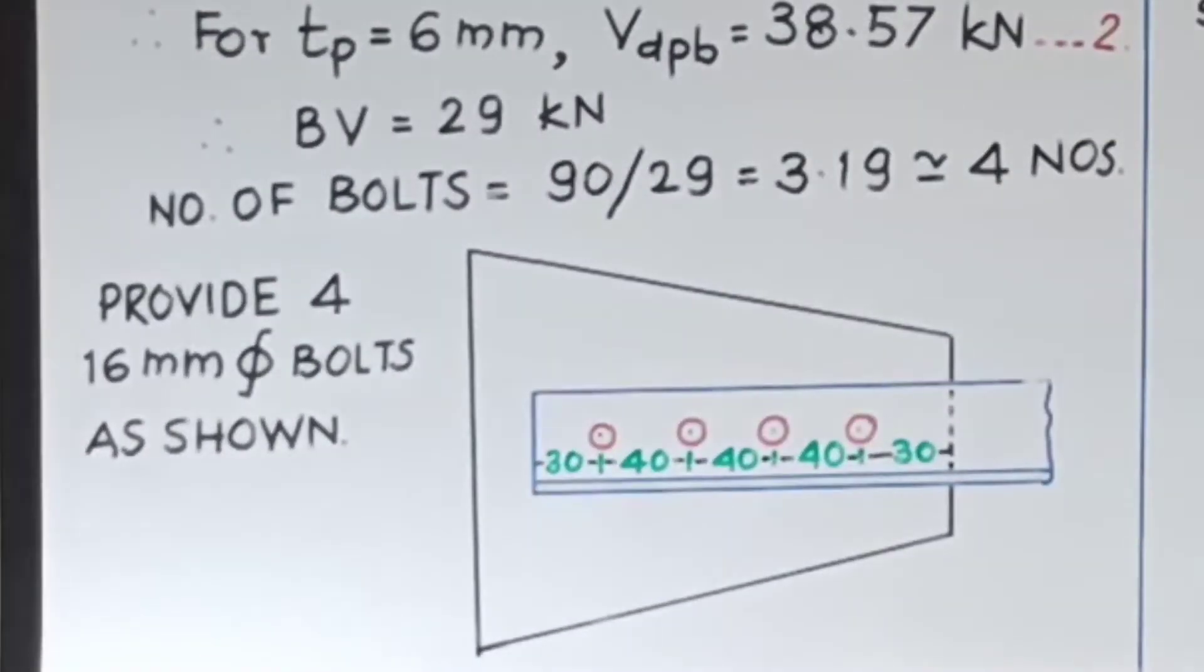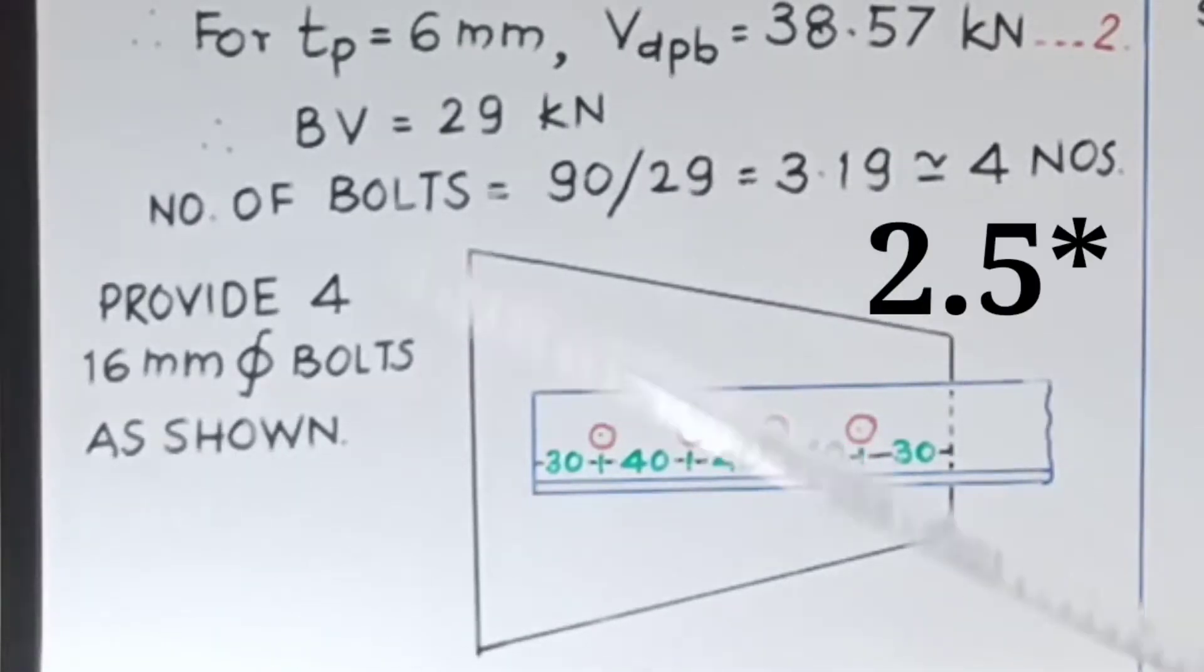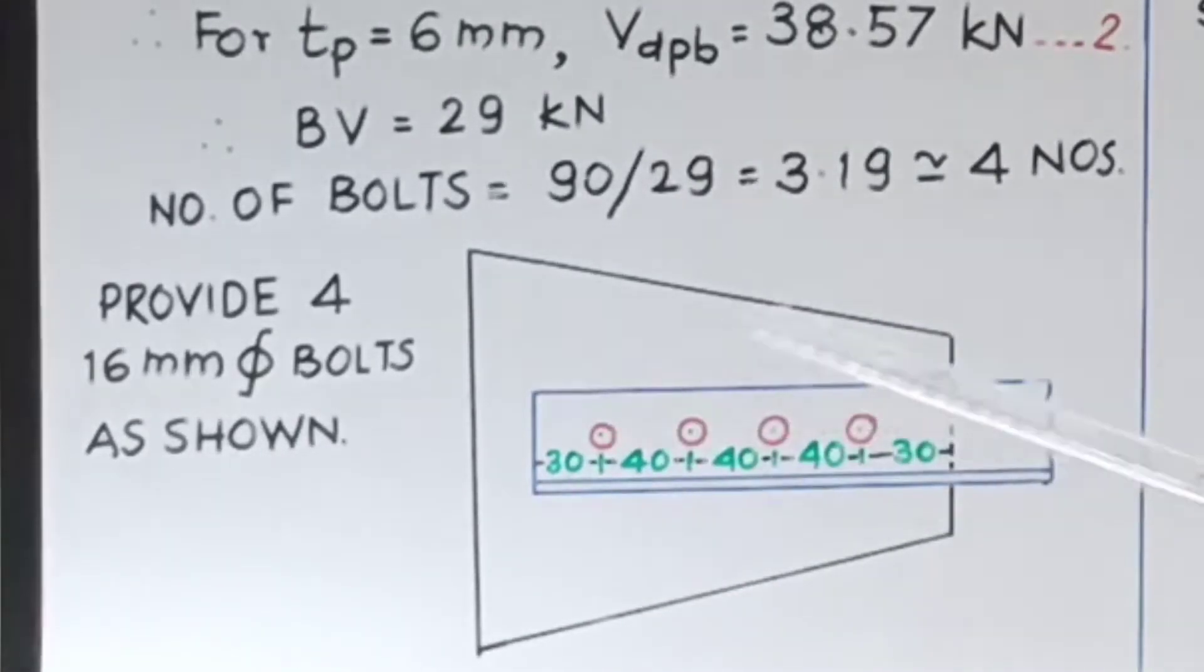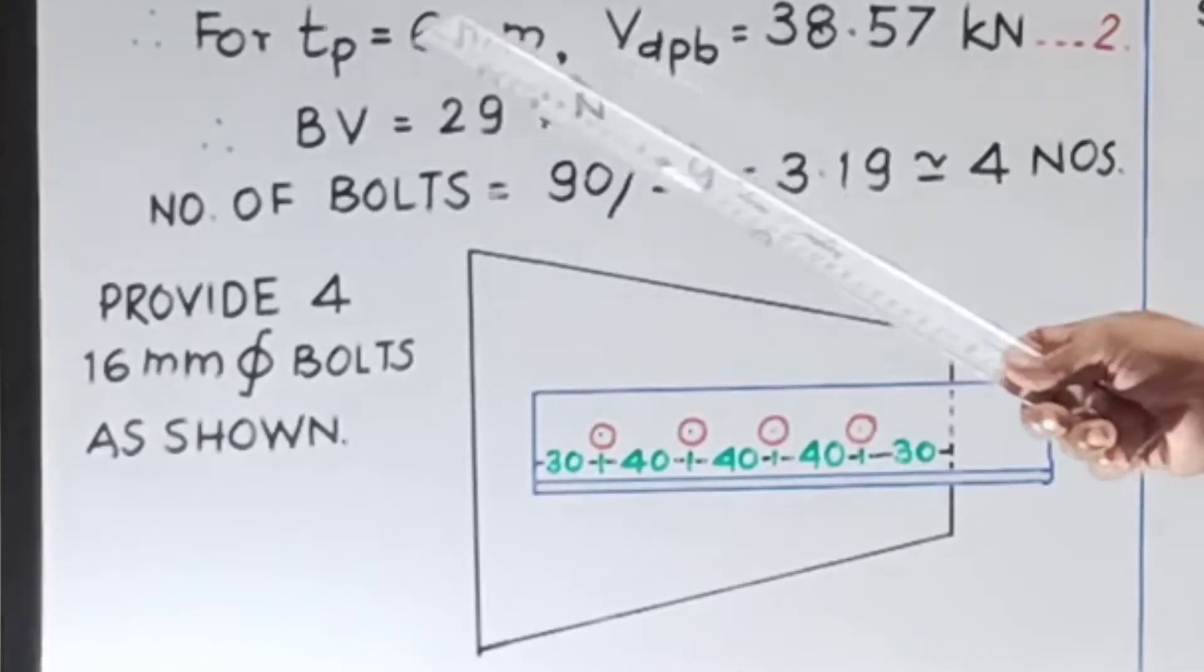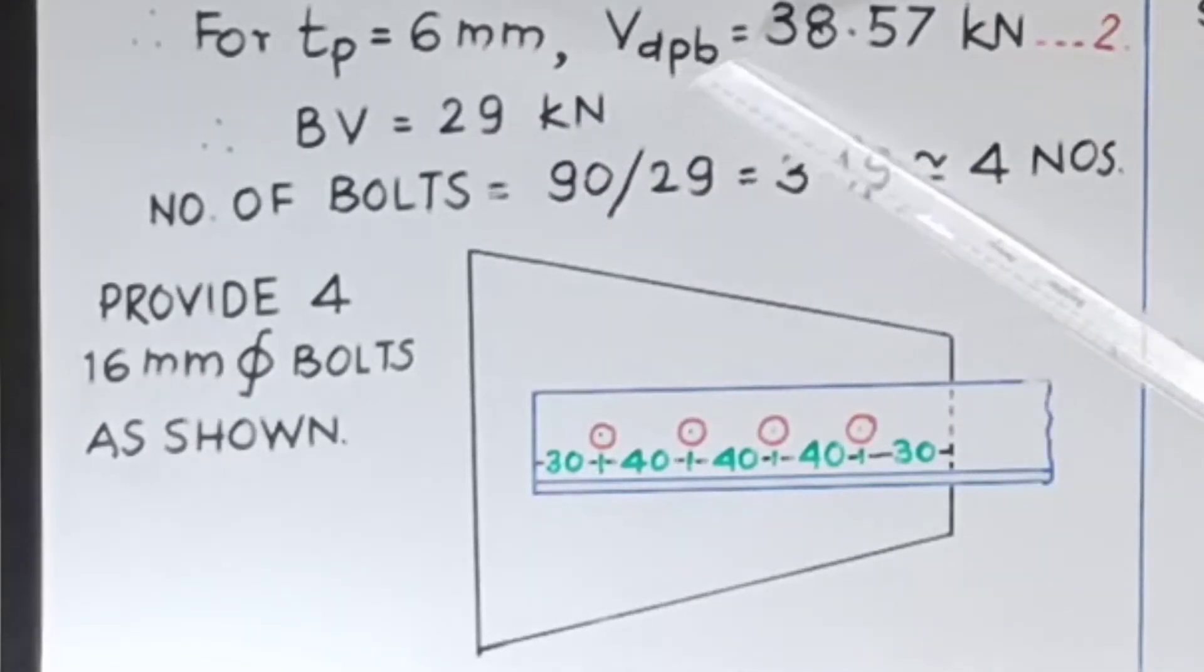TP will be 6 mm and 12 mm, minimum of them is 6 mm. Calculate VDPB by our regular formula 2.4 into FU into D into TP into KB divided by gamma MB divided by 10 raised to 3 because we have to convert to kilonewton and you will find that VDPB comes out to be 38.57 kilonewton.